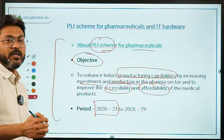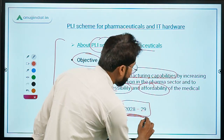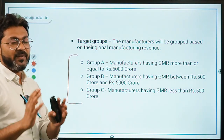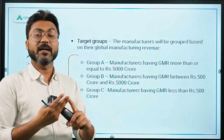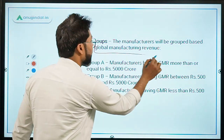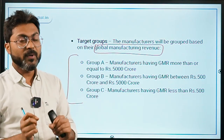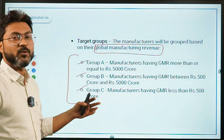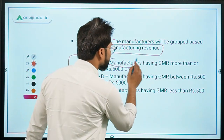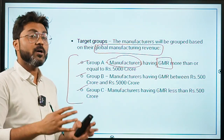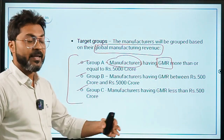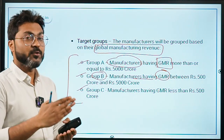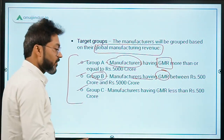Manufacturers under this scheme are divided into three groups based on their Global Manufacturing Revenue (GMR). Group A includes manufacturers with GMR greater than or equal to ₹5,000 crores. Group B includes those with GMR between ₹500 crores and ₹5,000 crores. Group C includes manufacturers with GMR less than ₹500 crores.